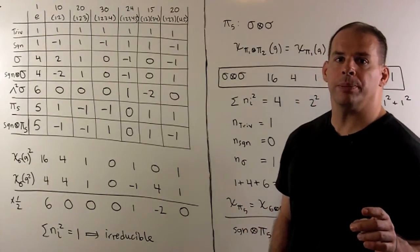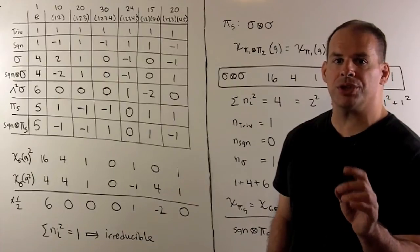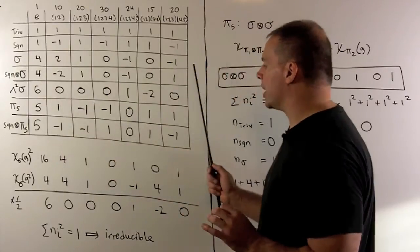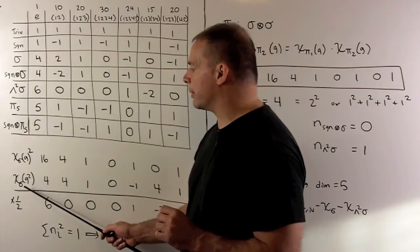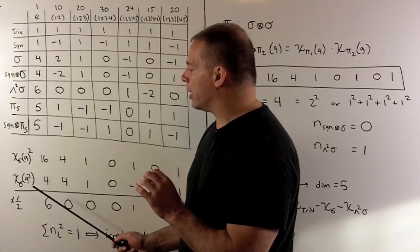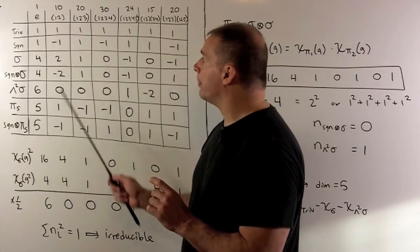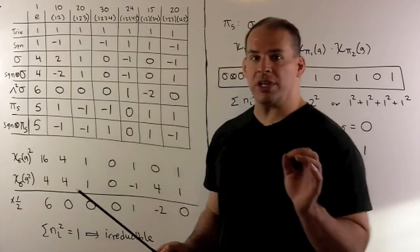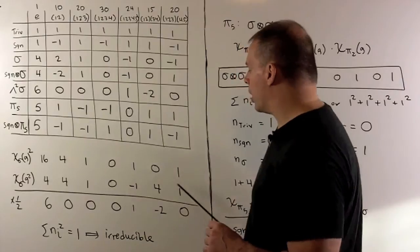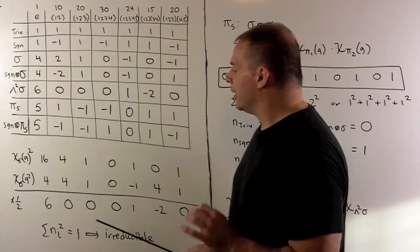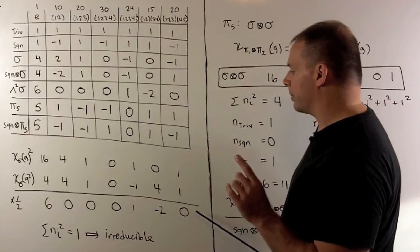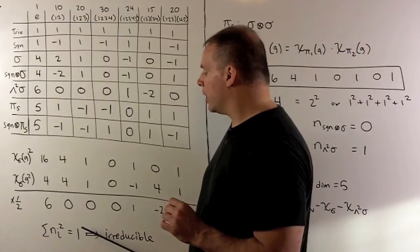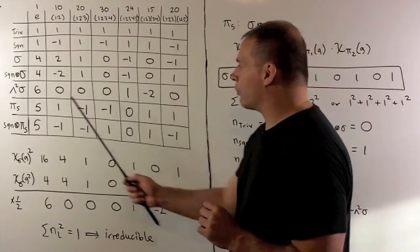For the next irreducible character, we apply our formula for alternating two-tensors to sigma. We'll need two rows. For the first row, I take the row for sigma and square each entry. Then we take the character for sigma applied to the square of our group elements. The identity squared is the identity, so I get 4. A two-cycle squared is the identity, so I get another 4. A three-cycle squared gives another three-cycle, so we get 1, and so on. Take the difference and divide by 2. Then we have the character for the alternating two-tensors of sigma. Checking the formula for the sum of squares of the multiplicities gives 1, which means we have an irreducible character. We put it in at row 5.